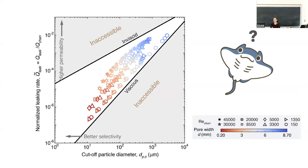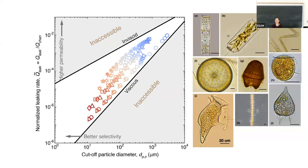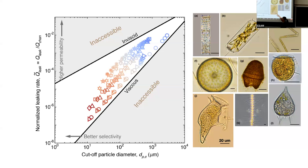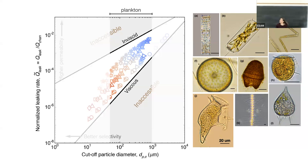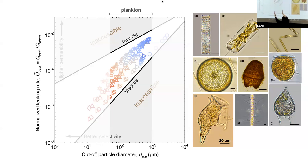Next you ask: if those are my constraints, as a manta, what do I want to do? The first thing the manta wants is to eat - it eats plankton. Looking at different plankton, each scale bar is 20 microns, so you can see plankton sits in a size range of about a couple hundred microns. If I think about that in terms of this plot, that's the plankton range on the cutoff particle diameter axis.